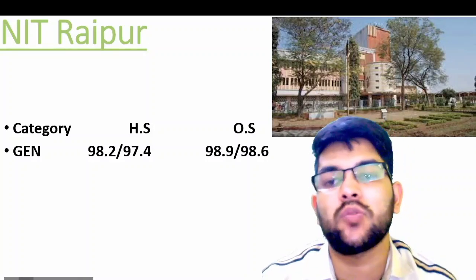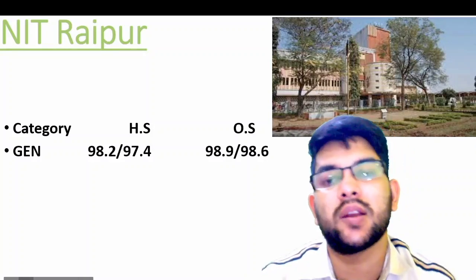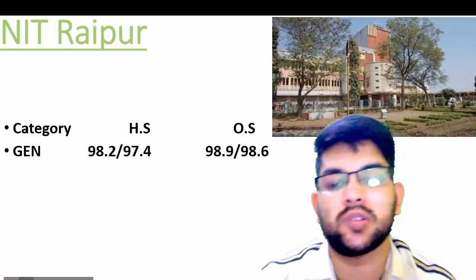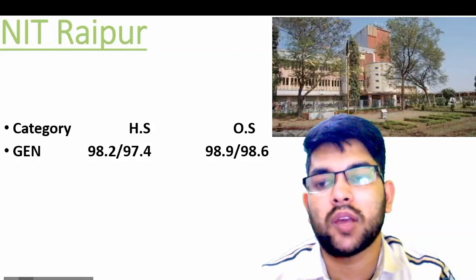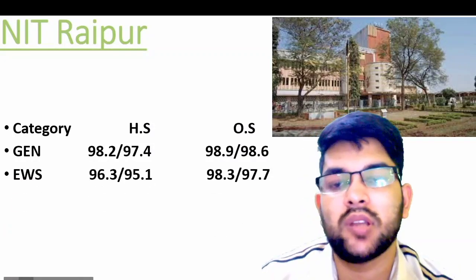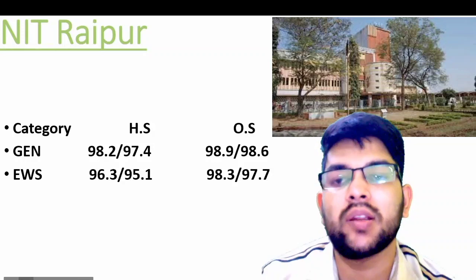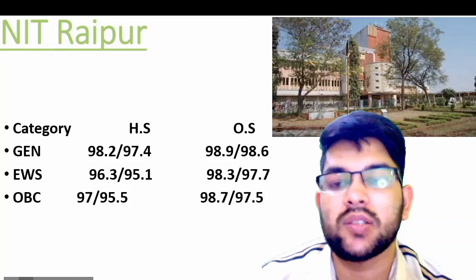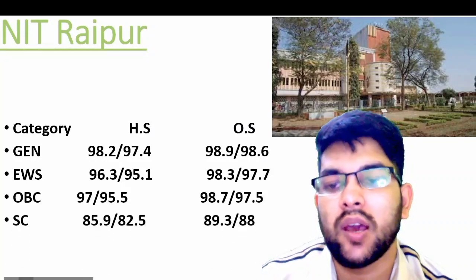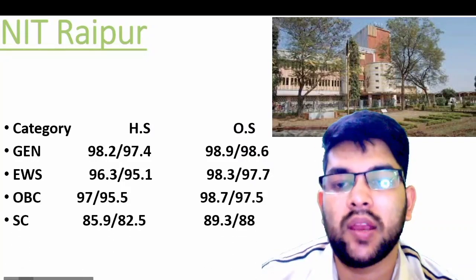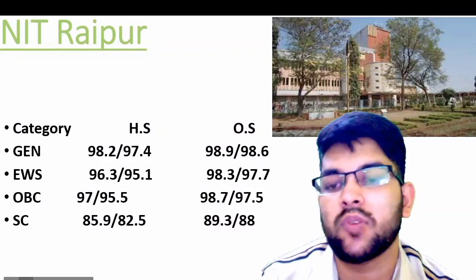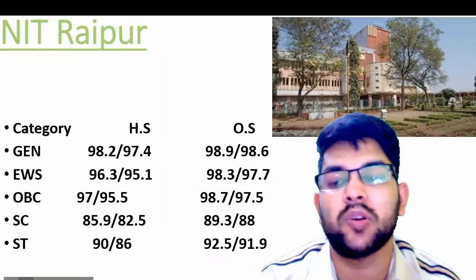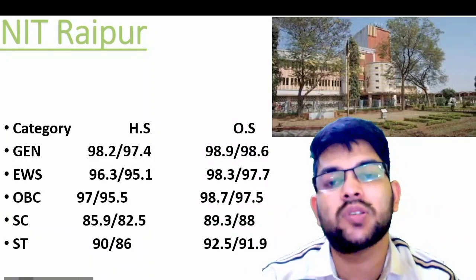For NIT Raipur — General home state: 98.2, other state: 97.4 percentile minimum to get CSE branch. For other state: 98.9 and 98.6 percentile. For EWS: 96.3 and 98.3 for male candidate home state and other state — for female you can check after the slash. For OBC: 97 and 98.7. For SC: 85.9 and 89.3 home state and other state. For ST: 90 and 92.5 percentile.